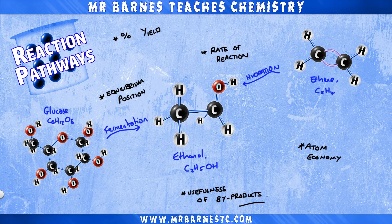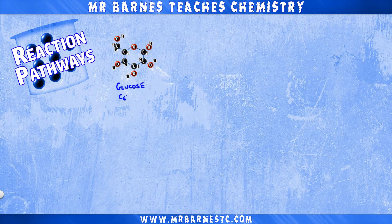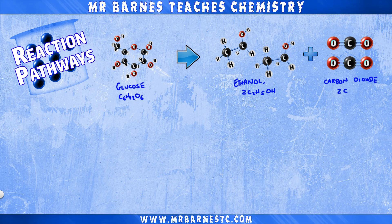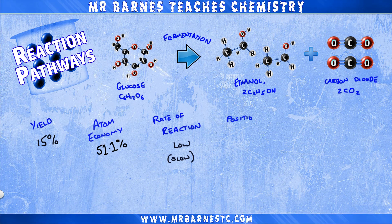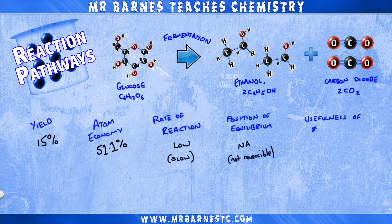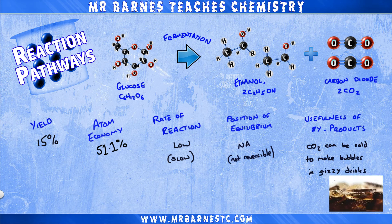So let's look at these two reactions. We'll start off with glucose. Glucose is broken down with yeast into ethanol and carbon dioxide in a process called fermentation. It produces a yield of 15% and an atom economy of 51.1%. You don't need to remember these numbers — they'll always be given to you in any questions on reaction pathways. It also has a slow rate of reaction, and you don't have to worry about the position of equilibrium because it's not reversible. Finally, for the usefulness of the byproducts, you've got CO2. You might think that's a greenhouse gas and a bad thing, but it can also be used by drinks companies — sold to them to make the bubbles in fizzy drinks. So you have got a use for that byproduct.